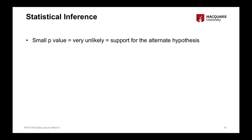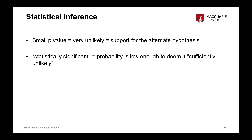The smaller our p-value is, the less likely it is that the null hypothesis is true. Therefore, the more likely it is that we have support for our alternate hypothesis. For us to conclude that we have a statistically significant result, the p-value — the probability of the null hypothesis being true — must be small enough for us to deem it sufficiently unlikely.